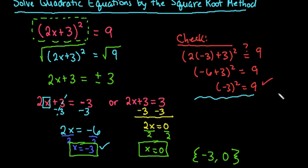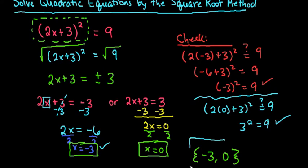Then we would do the same thing for our other solution. We would just see is two times zero plus three, if I square that, does that equal nine? This is really zero plus three, and we get three squared equals nine, which we know is true. So both of these work.